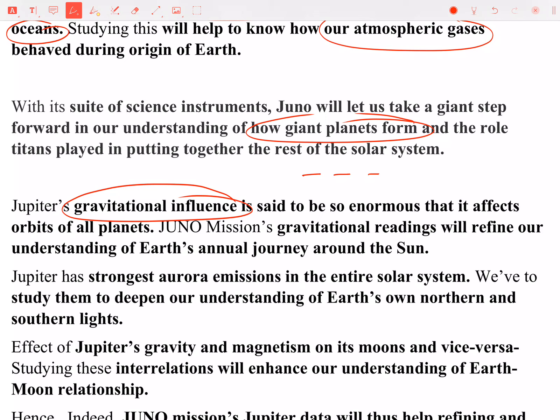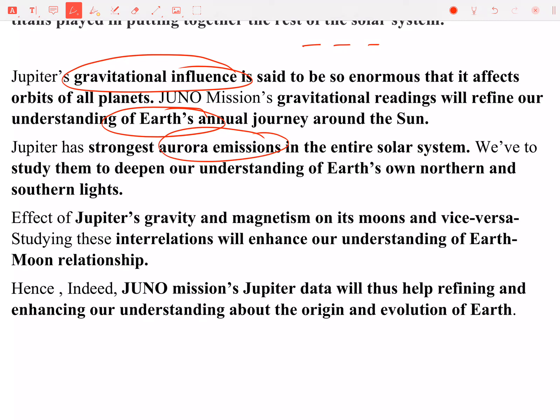Jupiter's gravitational pull is enormous. We know that the asteroid belt has been shaped and tracked by it. So we learn about Jupiter's gravitational pull, and from that we can relate to Earth's gravitational pull toward the Sun and get more knowledge from Jupiter's orbit around the Sun. Also, you should know about auroras — aurora exists on both Jupiter and Earth, but in the solar system, who has the strongest aurora emission? Jupiter. Once we understand the strongest aurora system, we gain comparative insights about Earth's.